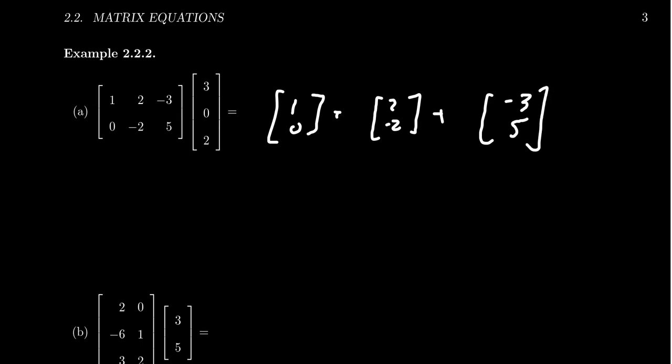Now, in that linear combination, the entries of the vector are the coefficients for that linear combination: 0, sorry, 0, 3, and 2.